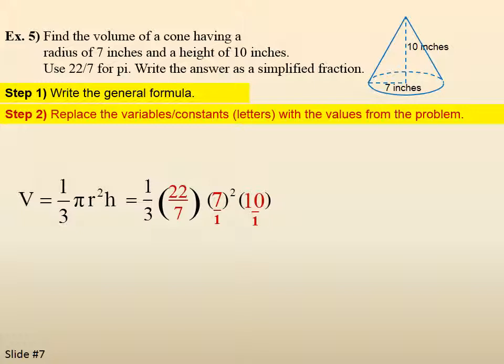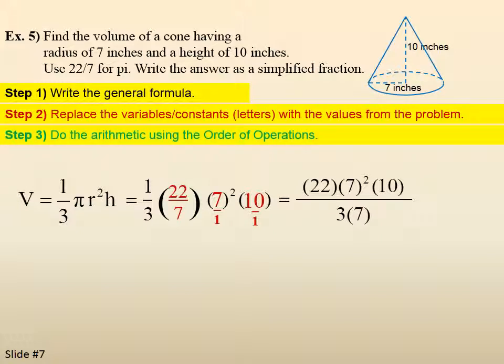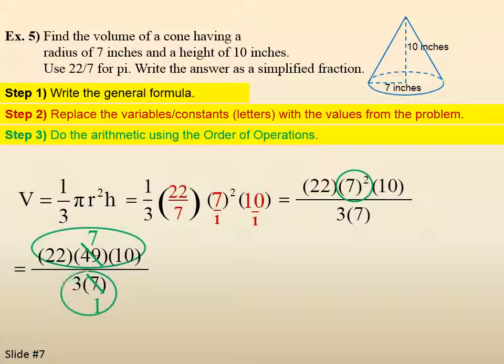I like to see my fractions here since I've got a pi as a fraction. Makes it easier to tell what's on top, what's on the bottom. Now we do the arithmetic using the order of operations. 7 squared gives us 49. I'm going to go ahead and reduce at this point. And then I'm going to multiply the top and then multiply the bottom. And I end up with 1540 over 3.